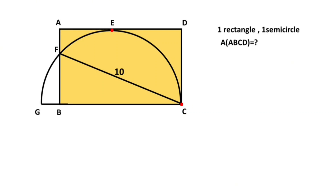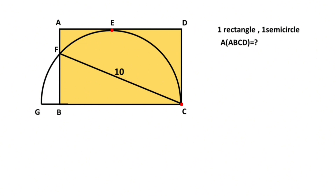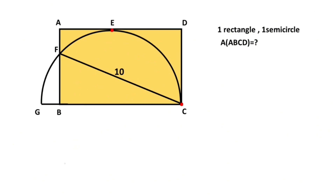In this video we have one rectangle and one semicircle, these are given as tangent. This length is given as 10 and the question is: what is the area of the rectangle?